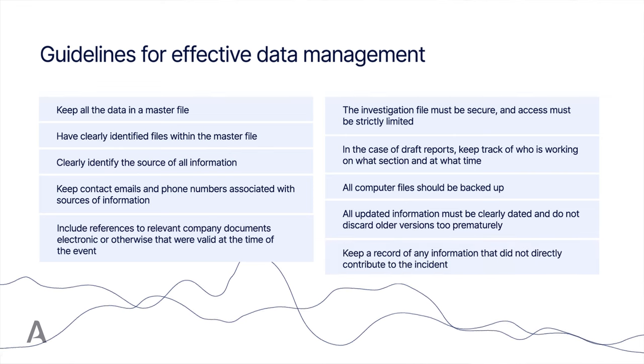Keep a record of any information that did not directly contribute to the incident, as the omission of that information might give the impression that the investigation team has forgotten something. Effective correlation of data from several different sources allows the investigator to see the interaction of various events that were occurring at the same time or in the same place. Presentation of factual information from several sources can be managed in various ways.